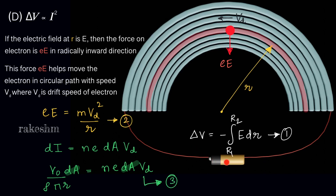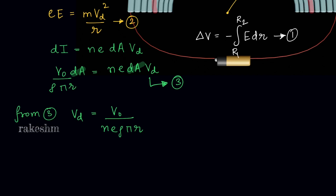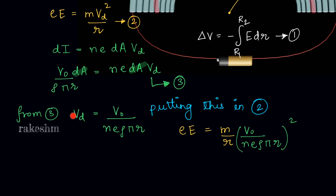We now have three equations: (1) delta V = −∫E·dr, (2) e·E = m·Vd²/r, and (3) from the current relation. From equation 3, we get Vd equals V0 divided by N·e·rho·pi·r. Substituting into equation 2, we get e·E equals m/r times (V0/(N·e·rho·pi·r))². This gives us the value of E.